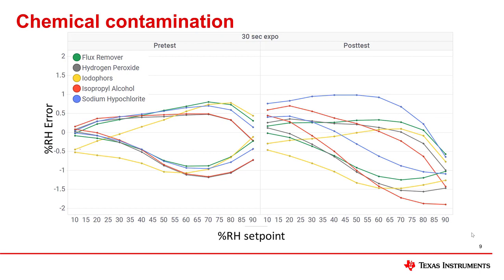The following graph shows the shift in the percent relative humidity error of a humidity sensor after exposure to certain chemicals. For this testing, five drops of each chemical were dropped directly on the sensor opening. The post-test results show a small negative gain that was introduced after chemical exposure.